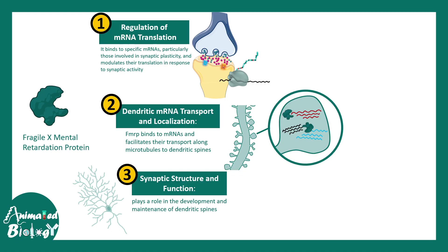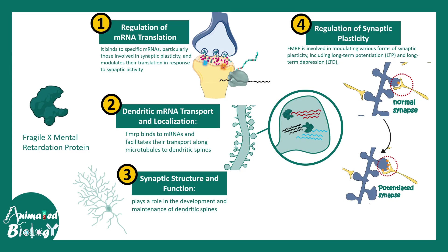Third, synaptic structure and overall dendritic arborization are regulated by FMRP. When this protein is non-functional or mutated, dendrites are abrogated. Lastly, FMRP regulates synaptic plasticity — it is reported to regulate both long-term potentiation and long-term depression. All these functions relate to synaptic architecture and neuronal connectivity, which explains why there are mental problems in these patients.